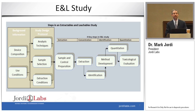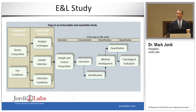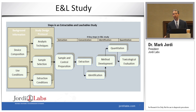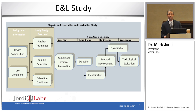In an E&L study, the main steps are shown in this figure. The first thing we want to do is carefully consider what are the materials of construction used in making the material that we're going to extract. The more data we have going into that study, the better we can predict what kinds of extractables and leachables might be present. We then spend time considering which analytical techniques we want to use, which is often controlled by which type of extractables we think are going to be present. Sample selection and extraction conditions are also very important.